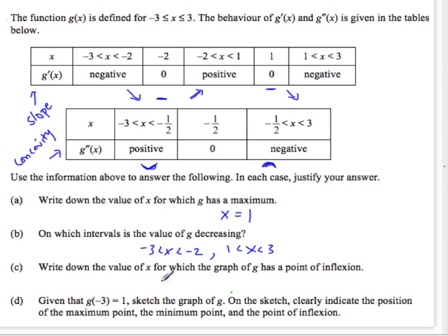Write down the value of x for which the graph has a point of inflection. Well, we just talked about that. Here, we see it goes from concave up to concave down. That's at x equals negative 1 half.